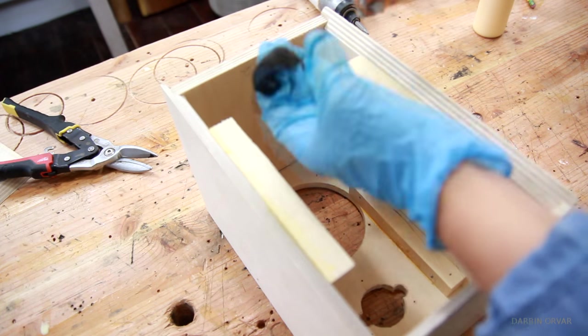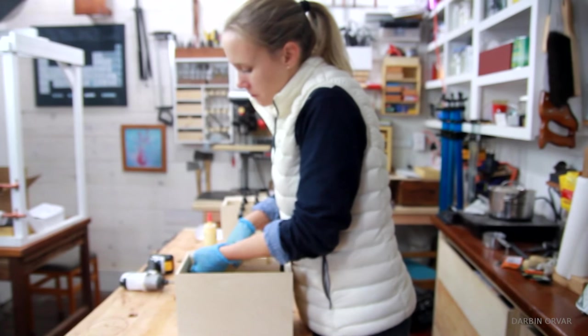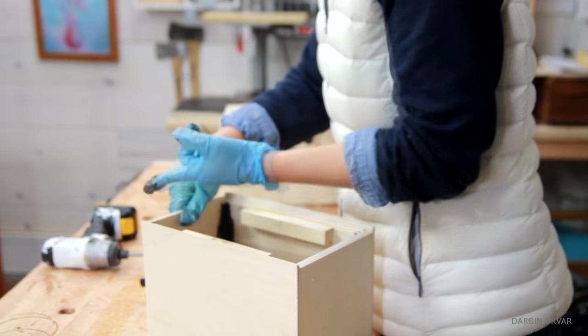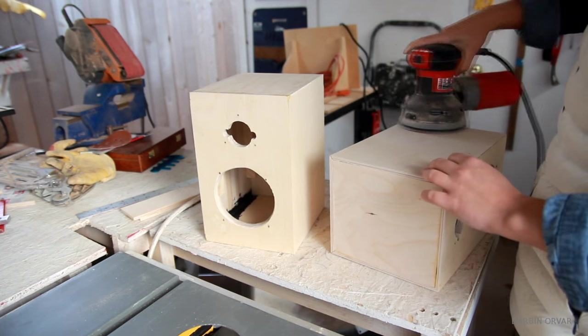Now I want to make a sealed speaker box, so I decided to put some black caulk in the corners on the inside to make sure the sound doesn't escape. And then I'm sanding the boxes smooth.